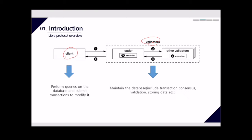Clients perform queries on the database and submit transactions to modify it. Validators maintain the database and process transactions submitted by clients. Validators use a distributed consensus protocol to agree on an ever-growing list of transactions. Libra uses a PBFT-based consensus algorithm so that the entire system can reach consensus with a minority of Byzantine validators.